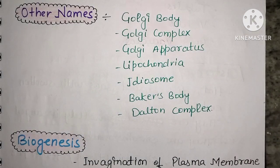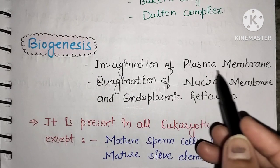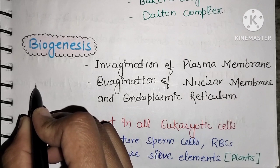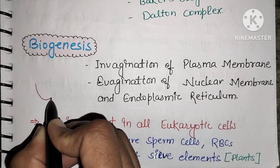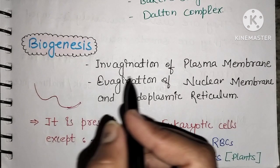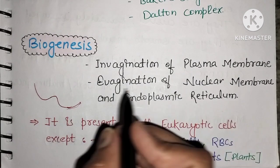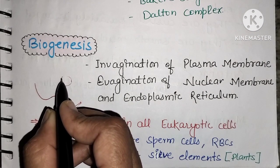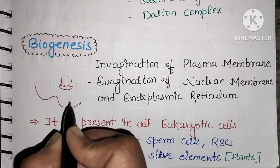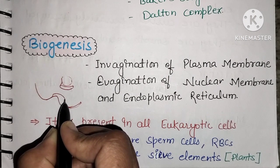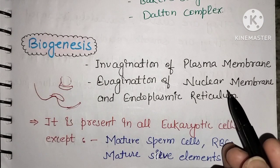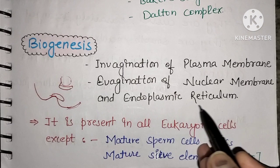Regarding Golgi apparatus biogenesis: the plasma membrane undergoes invagination, forming a structure from outside, and the Golgi apparatus can also form from the endoplasmic reticulum. These processes account for the formation of new Golgi apparatus in cells.